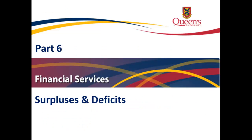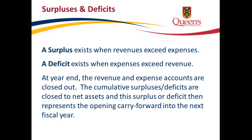Part 6: Surpluses and Deficits. A surplus exists when revenues exceed expenses. A deficit exists when expenses exceed revenue. At year end, the revenue and expense accounts are closed out. The cumulative surpluses and deficits are closed to net assets, and this surplus or deficit represents the opening carry-forward into the next fiscal year.